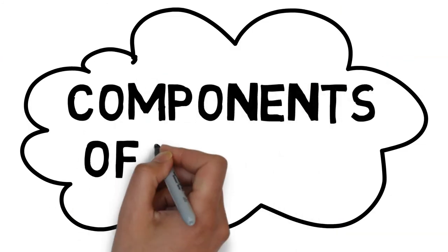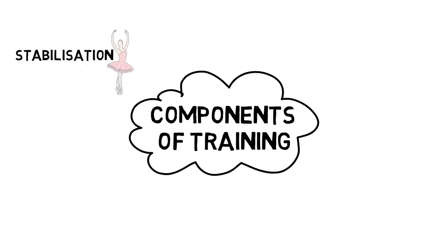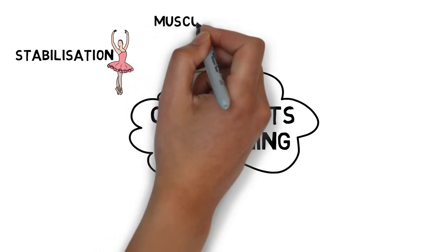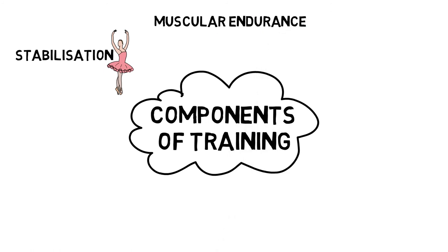Components of training include stabilization, which is the ability to get the right muscles to fire at the right time with the right amount of force in the correct plane. Muscular endurance, which is the ability to produce and maintain force production for prolonged periods of time.